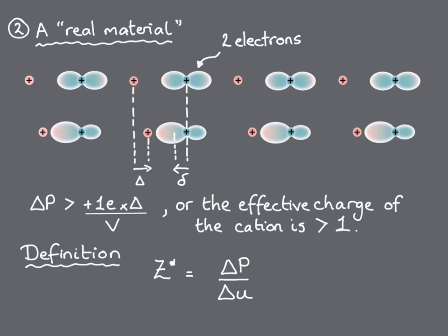This leads us to the formal definition of the born effective charge, which is usually called z star, and is given by the change in polarization divided by the amount that an ion, or rather the periodic sublattice of equivalent ions, is displaced, dP by du. In general, it's a tensor, because a displacement in one direction j can lead to changes in polarization in another direction i, and it's reported as a number, so it's normalized by the unit cell volume v divided by the electronic charge e.